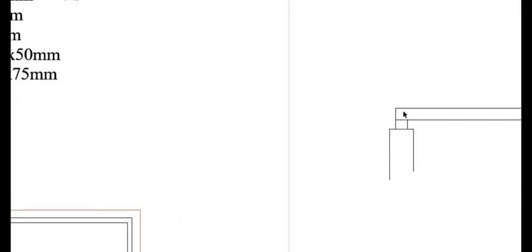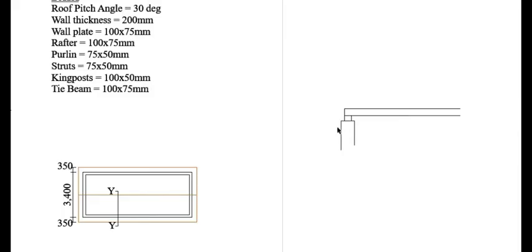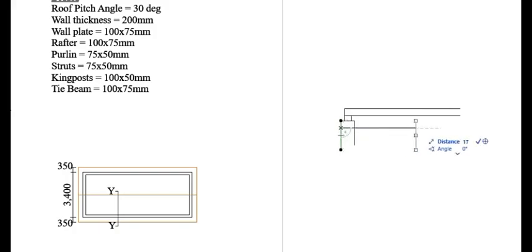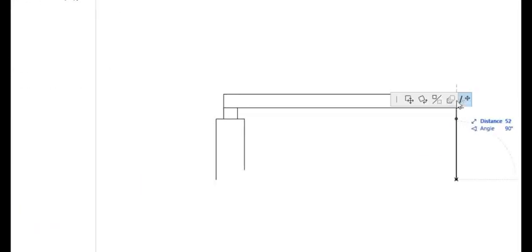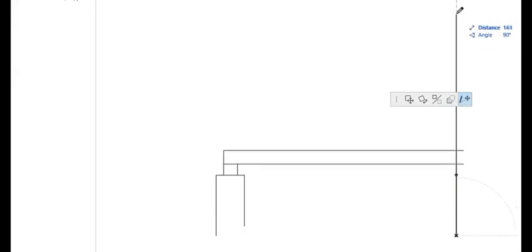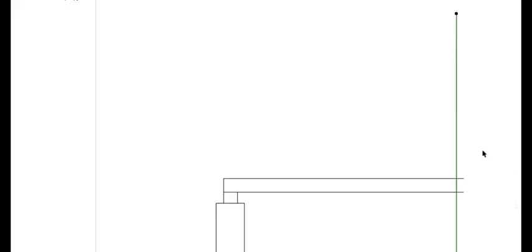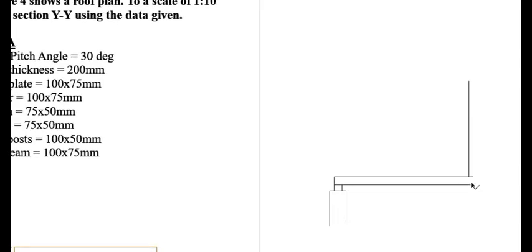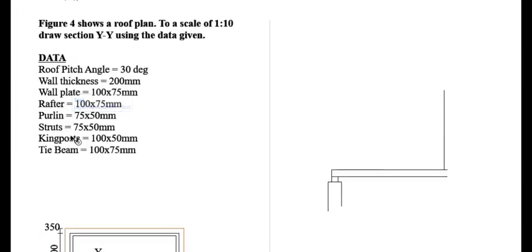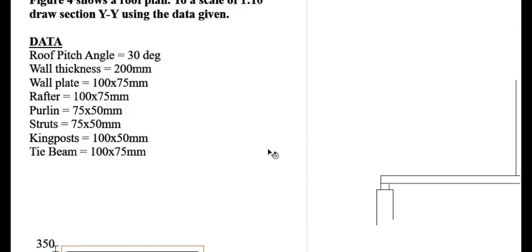The other thing we are going to do is draw our king post. The king post should be at the center, so from this point measure 170 millimeters going towards this side and then draw a line — 170 millimeters — then extend it upwards. This is where the center of our king post should be. We are told the dimension for the king post is 100 by 50 millimeters, so we shall see the 100 millimeter face.